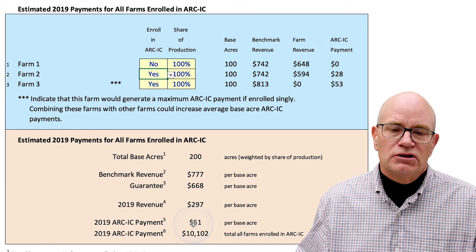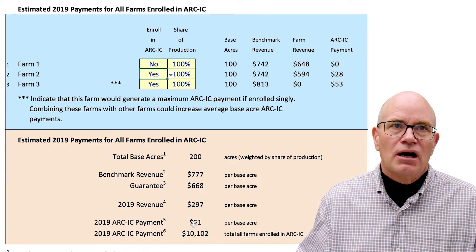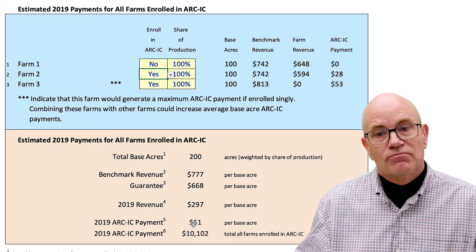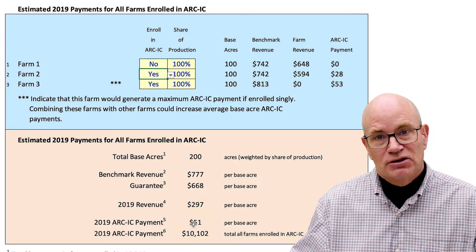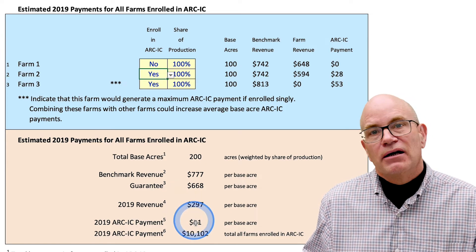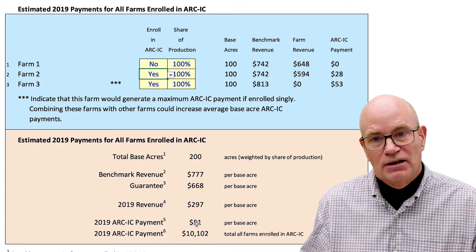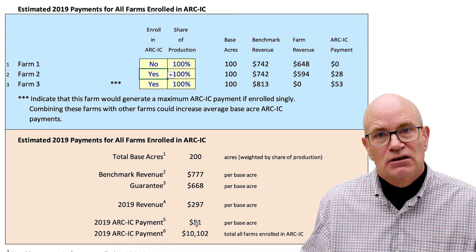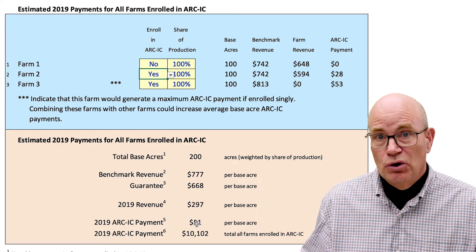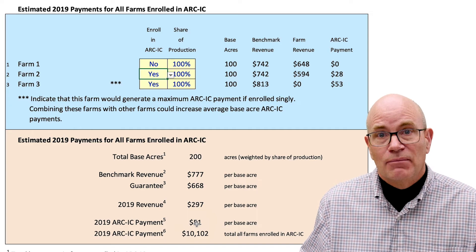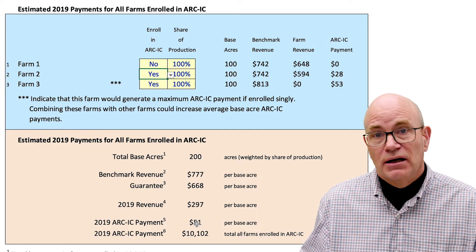What we would suggest is to go down the list and see which farms make a payment. Start with those that have the highest payments and keep going down the list to see what happens to the combined ARC-IC payment for 2019. This is a special situation in 2019 where we will know the yields for all ARC-IC farms, so we can closely estimate which farms will generate payments.